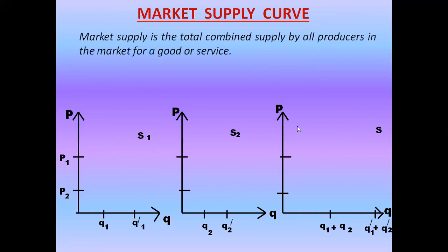The market supply curve is the total combined supply by all producers in the market for a good or service. When we add the supply of all producers for a particular good or service, that is the market supply. It is for a particular good but by all producers.